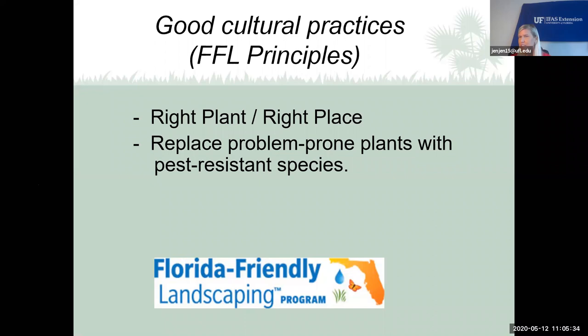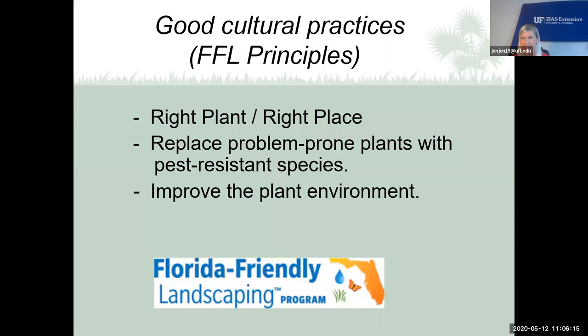If you have pest-prone plants, replace them with something pest-resistant. For example, certain cultivars of crepe myrtles are resistant to powdery mildew. Or if a plant always gets a certain pest — like oleanders always get the oleander caterpillar — and you don't want to fight that every year, I suggest removing that plant, because every year that insect comes and devours it.